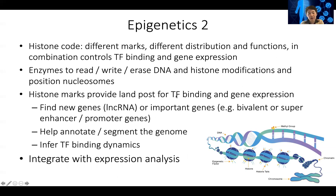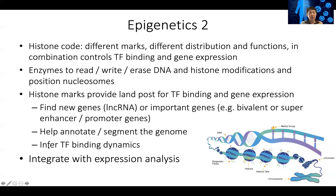Histone marks provide landmarks for TF binding. You can use the availability of histone mark profiles in a particular cell to identify new genes such as non-coding genes, to identify important genes such as bivalent genes, super enhancer genes, or super promoter genes. You can also use combinations of histone mark signals along the genome to segment the genome into promoters, enhancers, gene bodies, or insulator regions. You can use the dynamics of histone marks such as H3K27 acetylation or H3K4 monomethylation to infer which transcription factor binds there and how they regulate nearby genes, always integrating epigenetics with gene expression analysis.